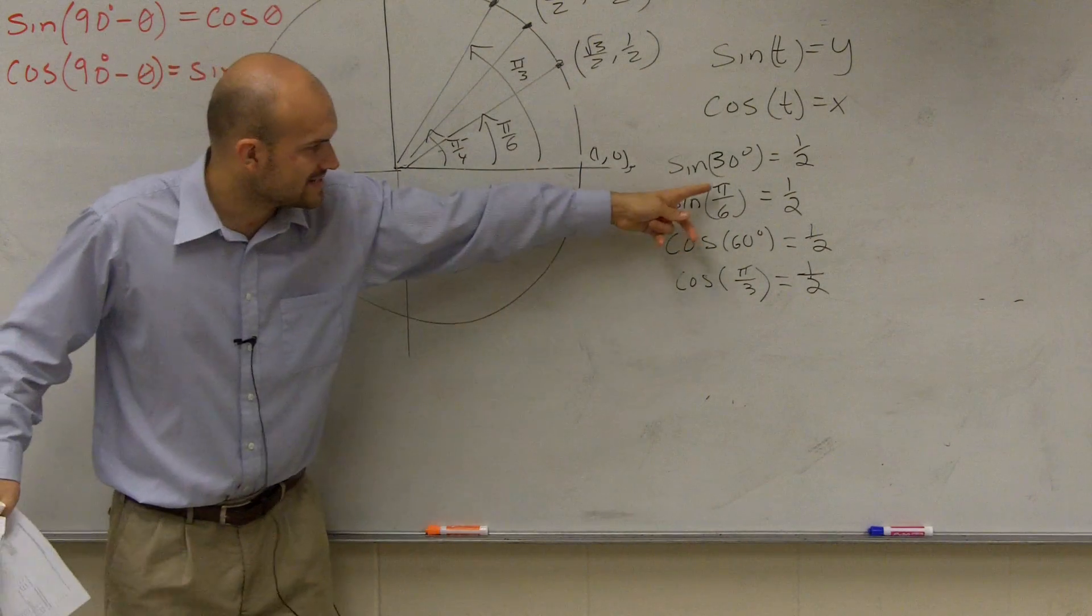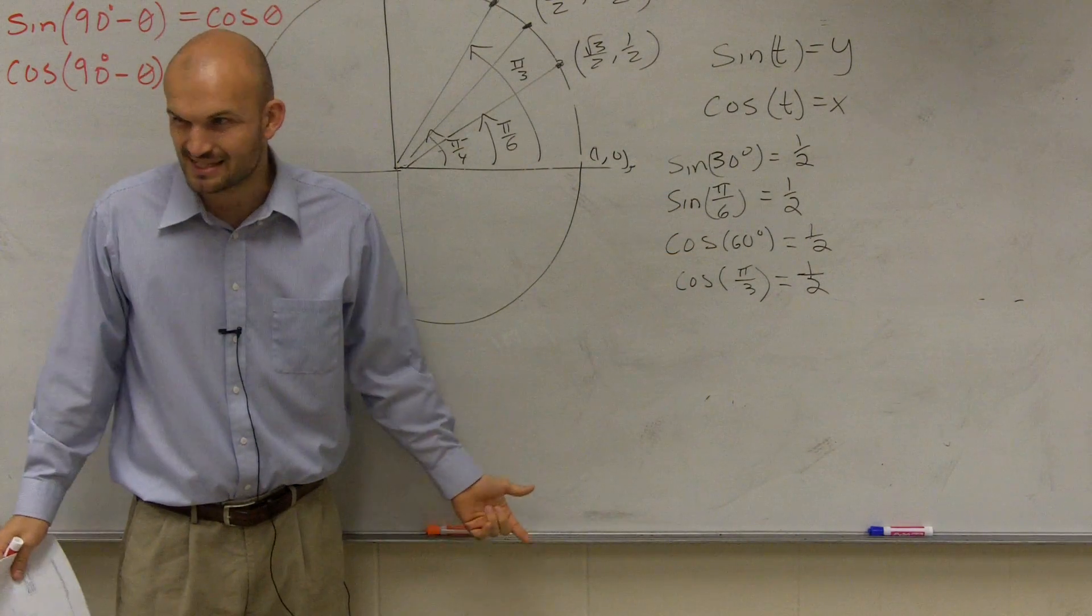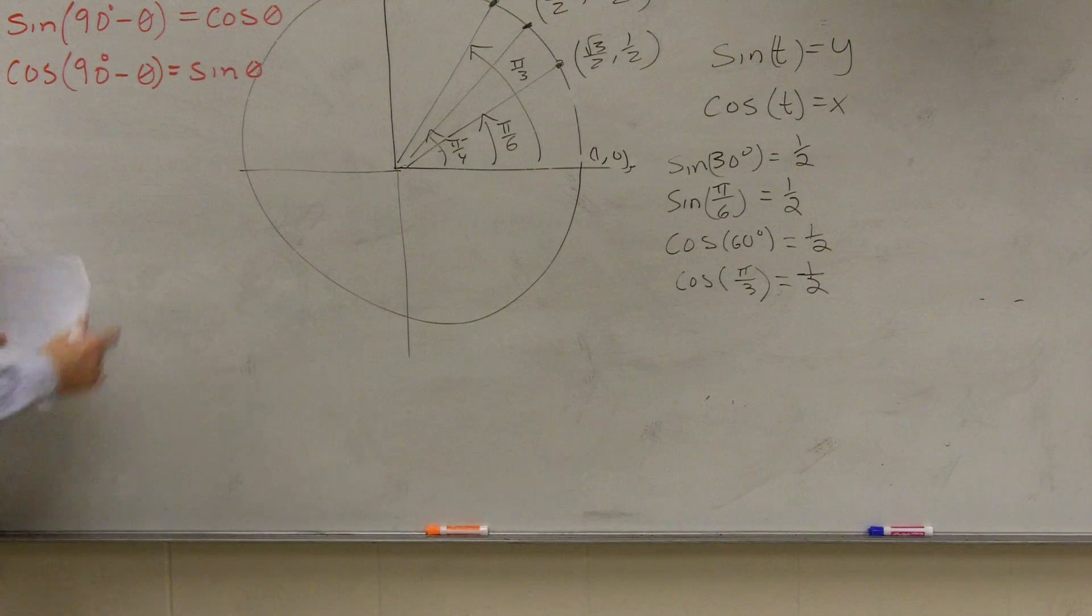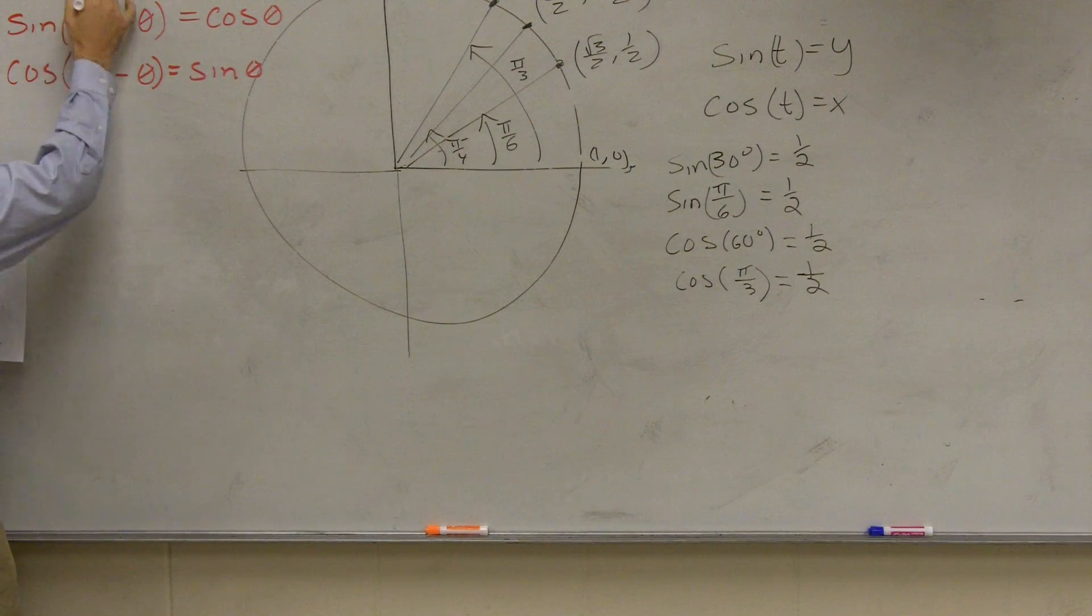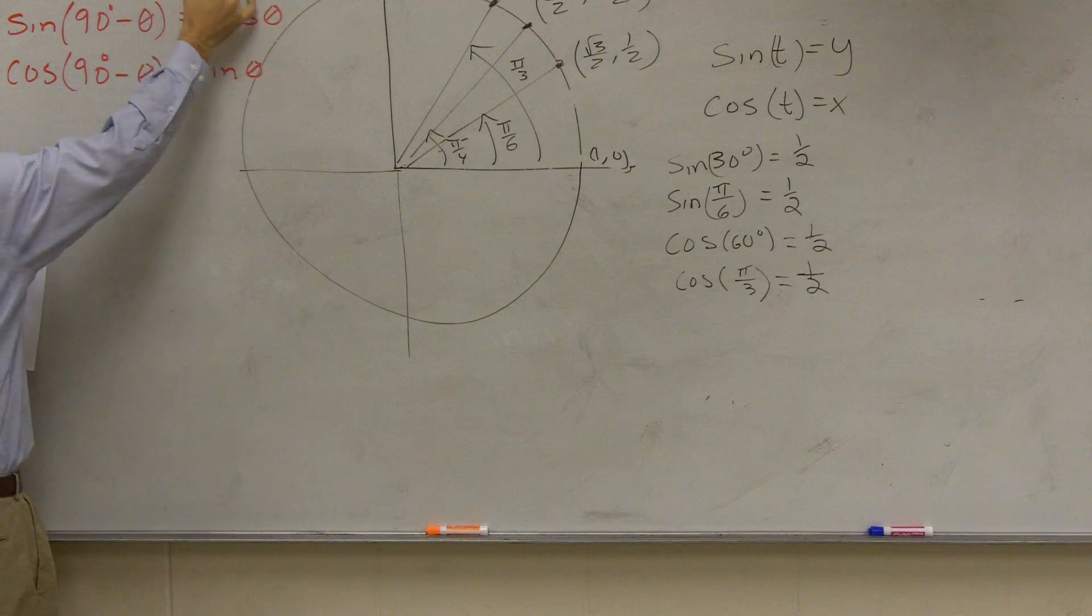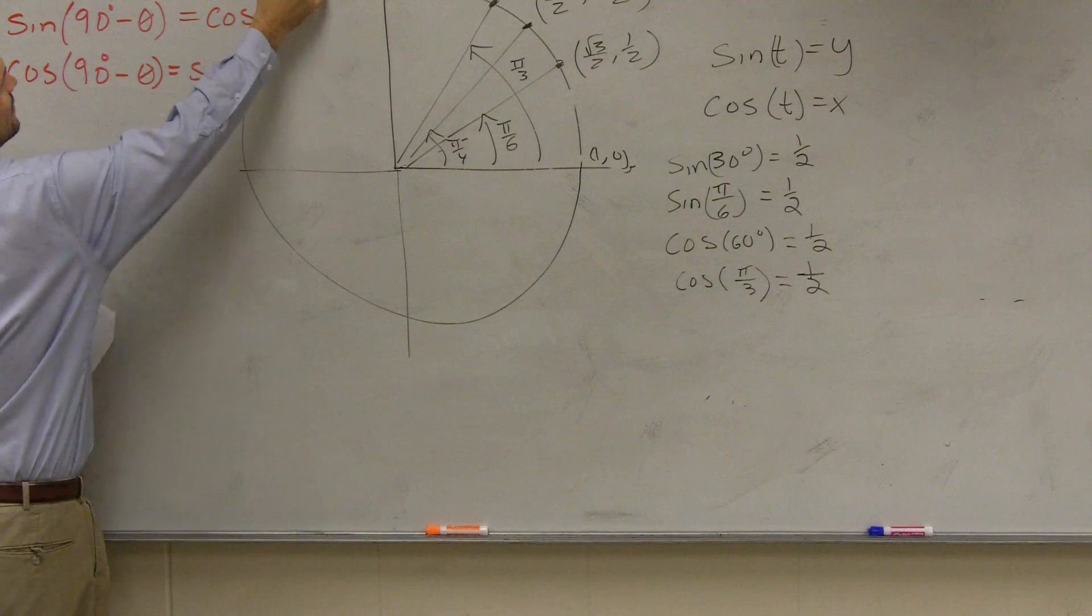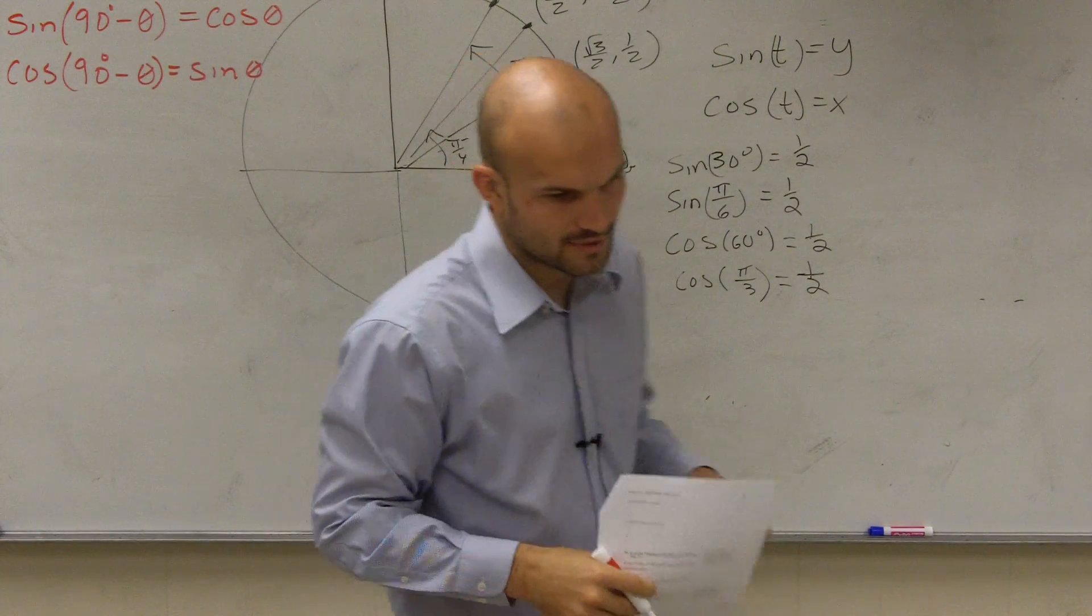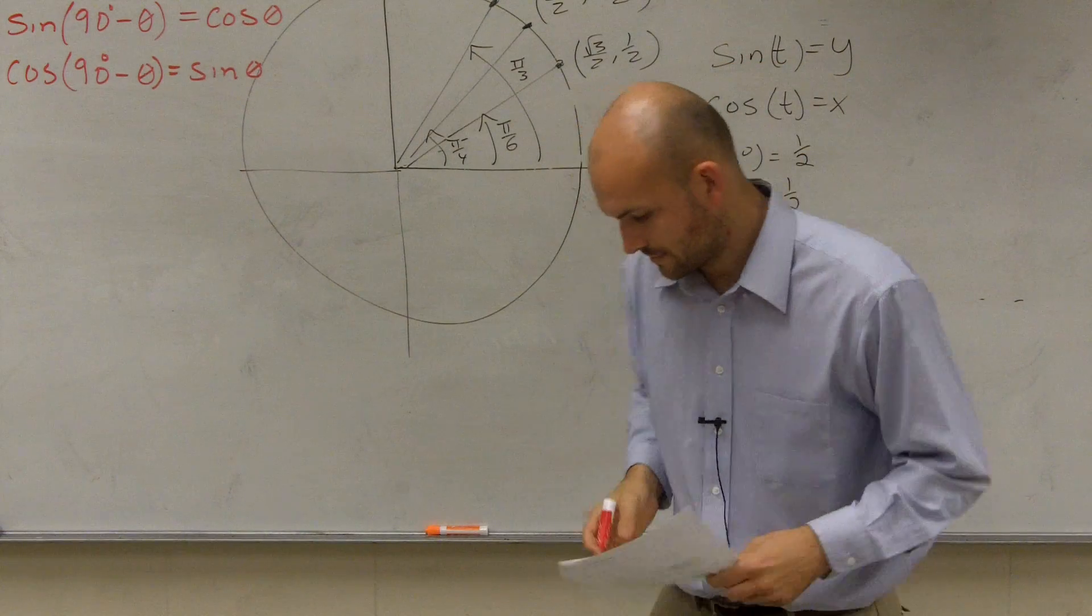Now, what about when I say pi over 6 and pi over 3? Is that the same thing? Yeah, it's just going to be radians. So what would you write it then if it was in radians? You could say sine of pi over 2 minus theta is equal to cosine of theta. Does everybody follow me with that?